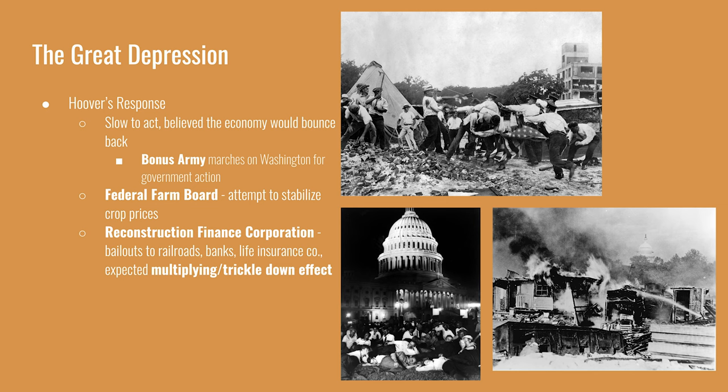The two agencies the Hoover administration put in place to ease the Depression were the Federal Farm Board and the Reconstruction Finance Corporation. The Federal Farm Board attempted to stabilize crop prices by holding crops in government-owned grain elevators. The Reconstruction Finance Corporation propped up railroads, banks, life insurance companies, and other financial institutions at risk of failing. The hope was that keeping those entities operating would create a multiplying, or trickle-down, effect for everyone who worked or benefited from those services.